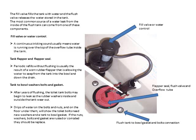The fill valve fills the tank with water and the flush valve releases the water stored in the tank. The most common source of water leaks from the inside of a flush tank is the fill valve or water control valve. A continuous trickling sound usually means water is running over the top of the overflow tube inside the tank. Periodic refills without flushing are usually the result of a worn rubber flapper that is allowing water to seep from the tank into the bowl and down the drain.